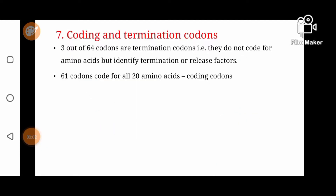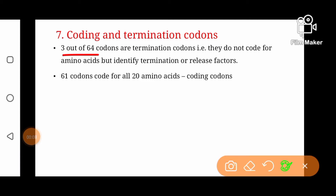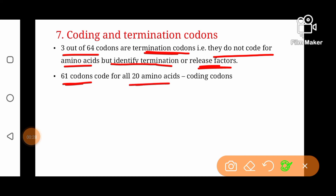Another property is that there are some coding codons and some termination or stop codons. Three out of 64 codons are termination codons — they do not code for any amino acids but they identify termination or release factors, which are proteins that cause the termination of polypeptide chain synthesis. And 61 codons out of 64 are coding codons or sense codons which code for 20 amino acids. So this was all about genetic code and its properties.